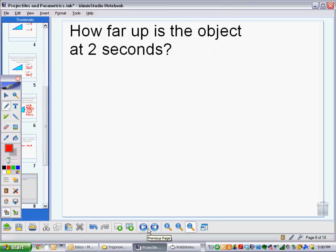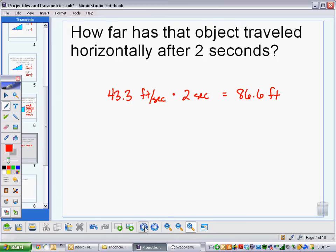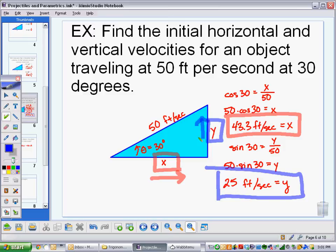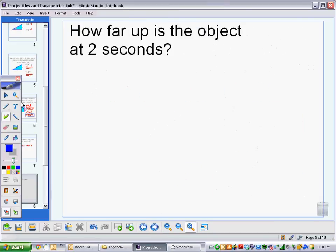How far up is the object at two seconds? Well, I would take that vertical component, my 25 feet per second right here. That's how fast it's going up and multiply that by the time. So 25 multiplied by two. So 25 feet per second multiplied by two seconds gives me 50 feet up.